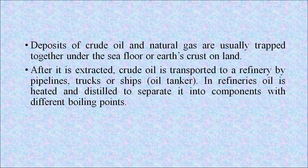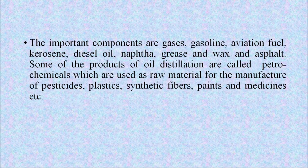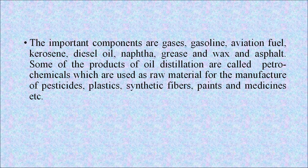Deposits of crude oil and natural gas are usually trapped together under the sea floor or earth's crust on land. After extraction, crude oil is transported to a refinery by pipelines, trucks or ships. In refineries, oil is heated and distilled to separate it into components with different boiling points. The important components are gas, gasoline, aviation fuel, kerosene, diesel, oil, naphtha, grease, wax and asphalt. Some products of oil distillation are called petrochemicals, used as raw material for the manufacture of pesticides, plastics, synthetic fibers, paint and medicines.